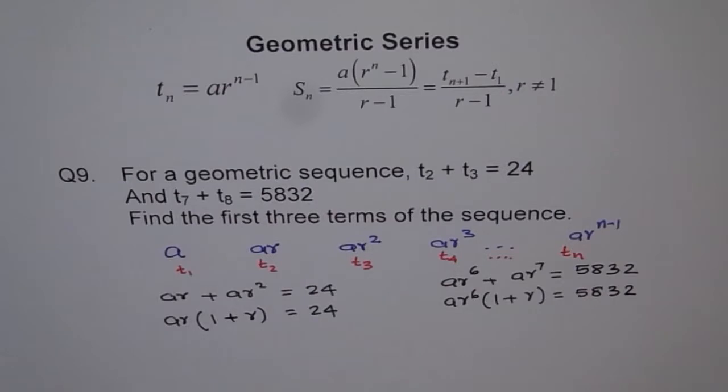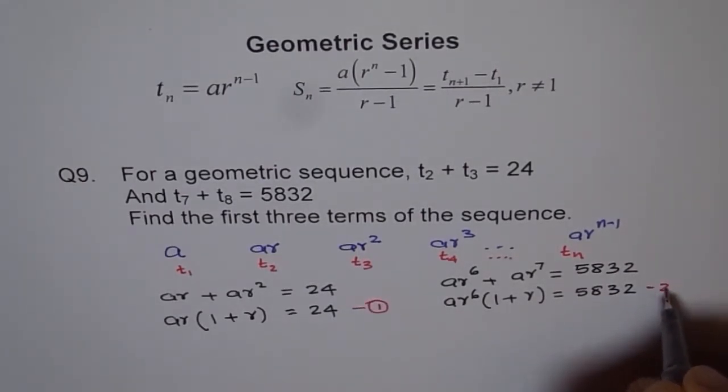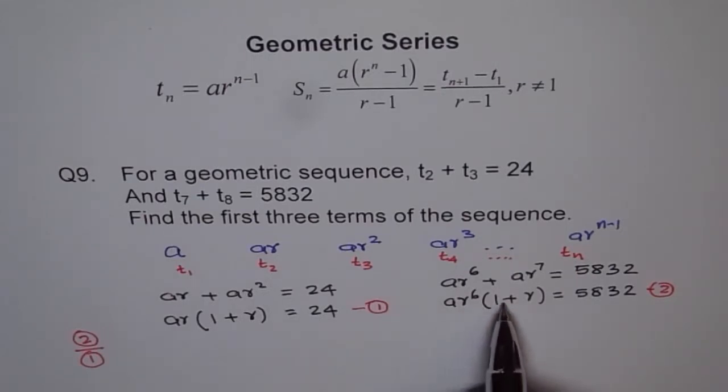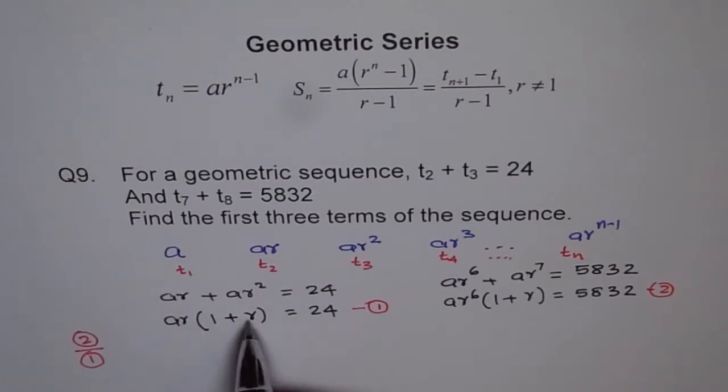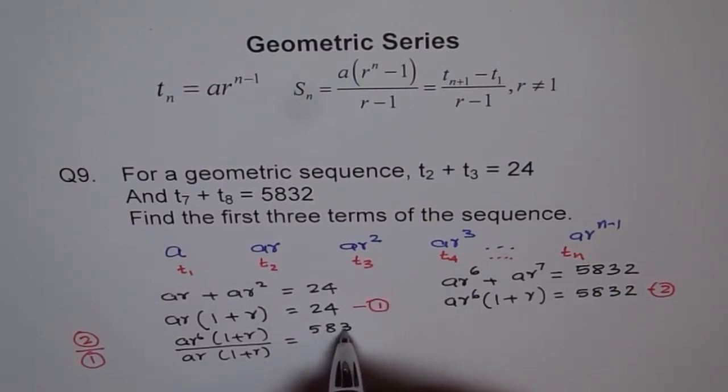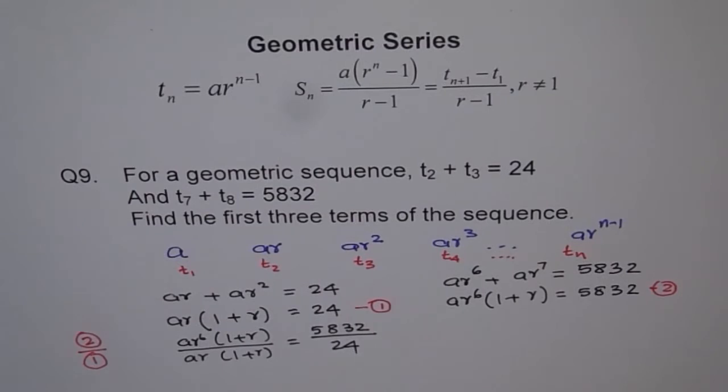So, do you see some way of finding now? What we will do is we'll number our equation. Let's say this is my equation number 1 and this is my equation number 2. So, what will happen if I divide equation number 2 by equation number 1? Let's do that. If I do this over this, that means what I'm trying to do here is a r to the power of 6 times 1 plus r divided by a r. So 1 plus r and 1 plus r will cancel out.